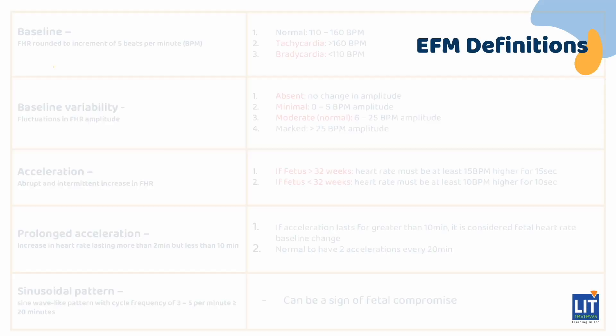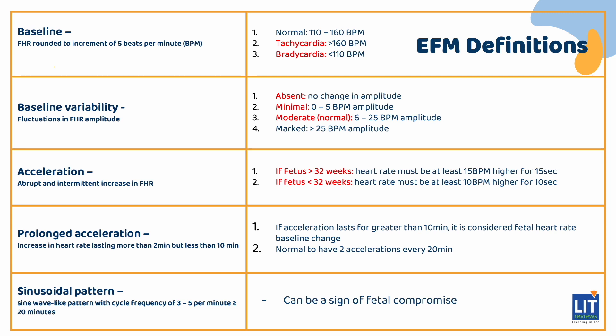Let's review the EFM definitions. The fetal heart rate baseline is determined as the average fetal heart rate over a 10-minute window. Normal is between 110 and 160 beats per minute. Tachycardia is defined as greater than 160 beats per minute; some causes include fetal or maternal hyperthyroidism, anemia, acidosis, or fetal tachyarrhythmias. Bradycardia is defined as less than 110 beats per minute and can result from hypothyroidism, fetal heart block, hypotension, or epidural use. Fetal hypoxia can lead to either tachycardia or bradycardia.